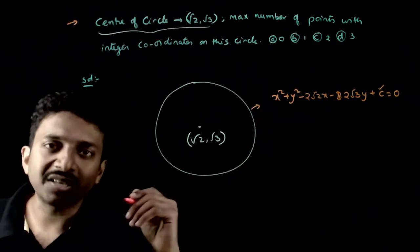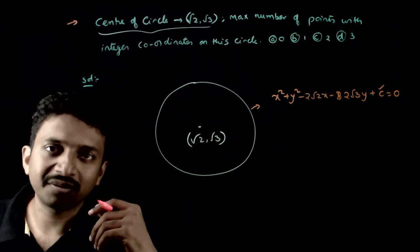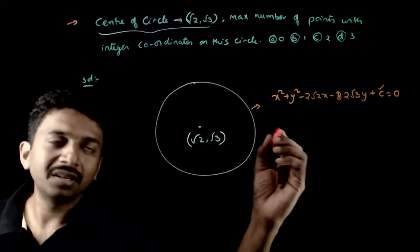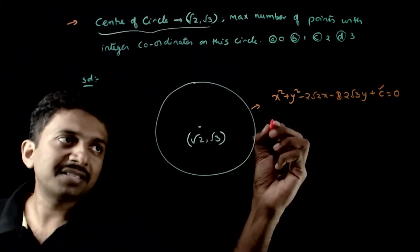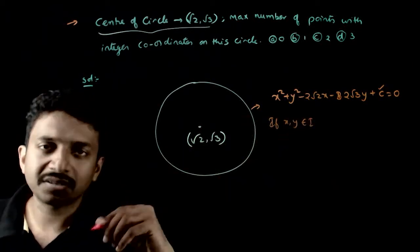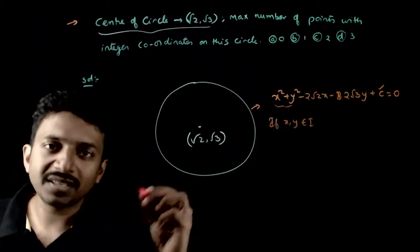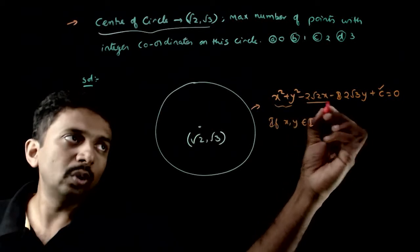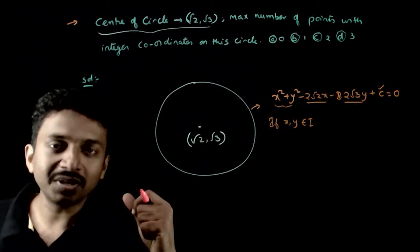So if c is a rational number, if x comma y belongs to integers, then x² + y² is an integer. But 2√2x and 2√3y are irrational numbers.